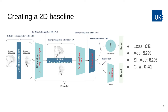We take three different measures into account: standard accuracy; a sliding window accuracy, where a case is considered correct when it is within the correct TICI score plus or minus 1; and Cohen's Kappa, a measure for observer variability often reported in the literature regarding human performance in TICI scoring. This first approach leads to an accuracy of 52%, a sliding window accuracy of 82%, and a Cohen's Kappa of 0.41.